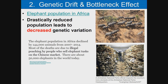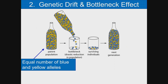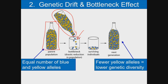A second example of the bottleneck effect is the elephant population in Africa, which has been drastically reduced, resulting in decreased genetic variation — they are hunted for their tusks. Imagine the entire population inside a bottle: a natural disaster or hunters come along and kill almost all of them. Only the ones that made it through the bottleneck survive. In the surviving population, there are far more blue than yellow individuals, meaning fewer yellow alleles and lower genetic diversity in the new generation.